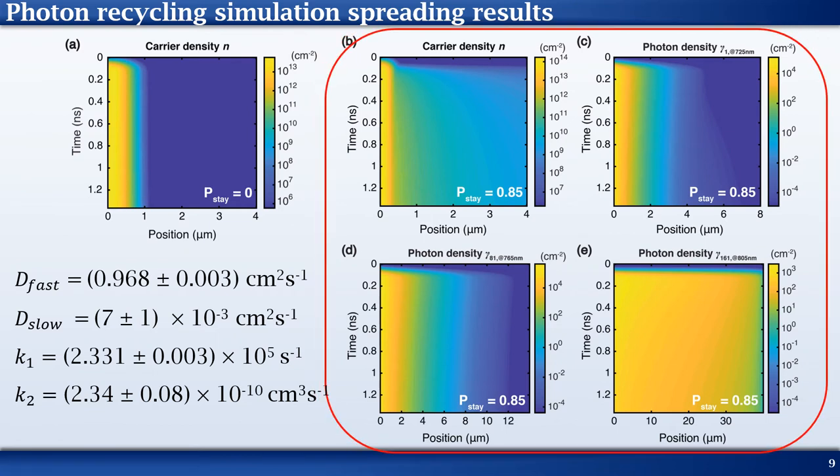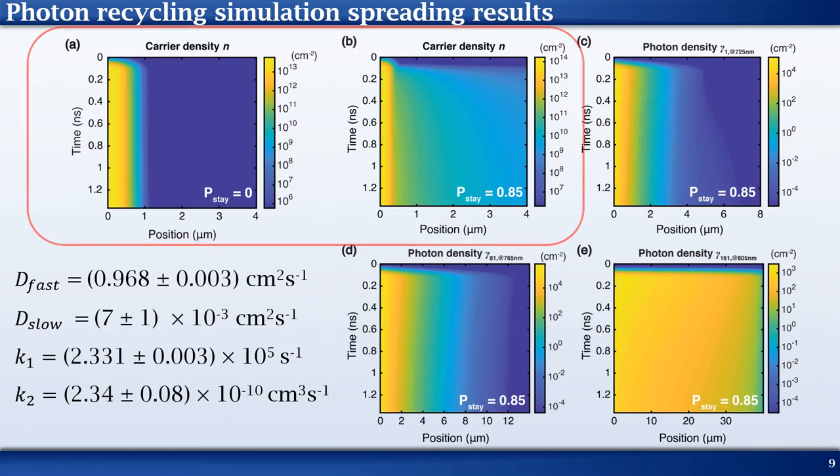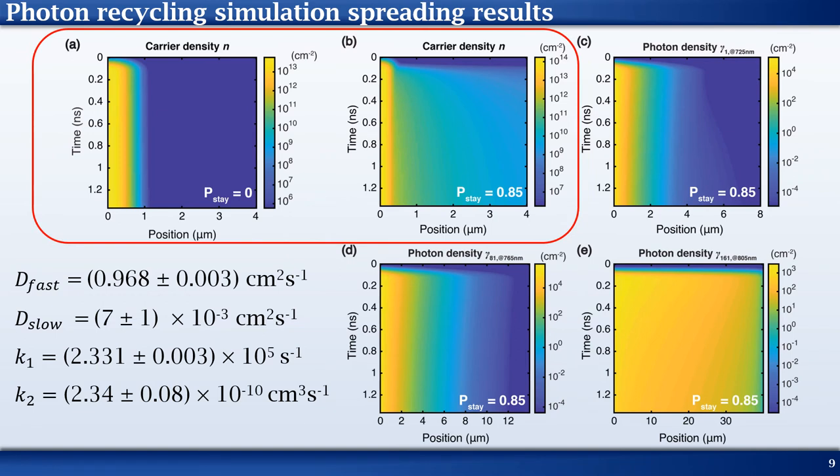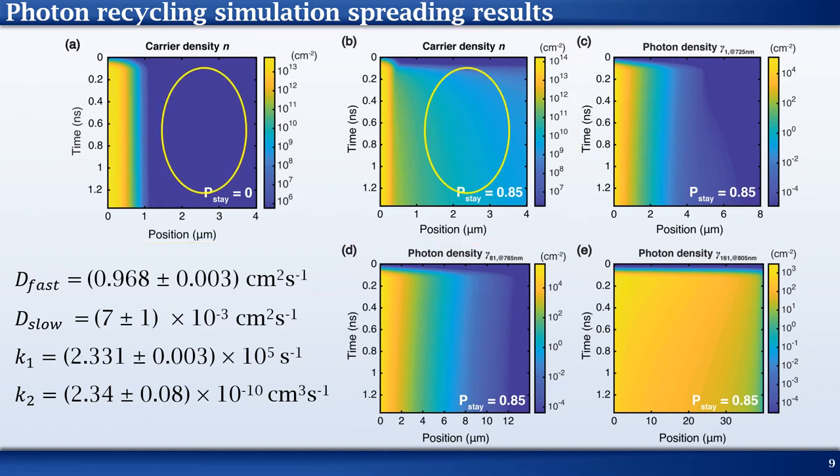The second case is for p_state equals to 0.85, when photon recycling is present. Panel B illustrates the charge carrier distribution for this scenario. By comparing both panels A and B, we immediately see that there is significantly more spatial spreading in B due to photon recycling. In regions more than a micron away from the pump, photon recycling leads to increase in the carrier density by over 4 orders of magnitude.